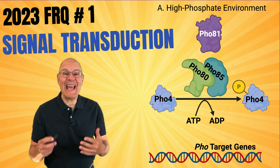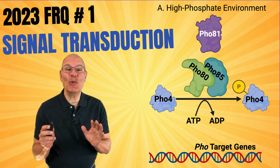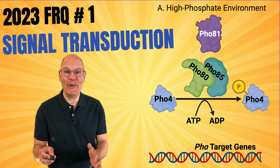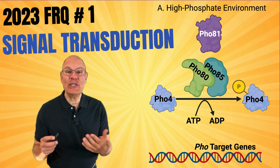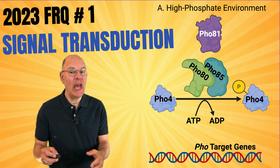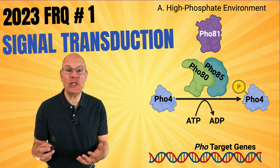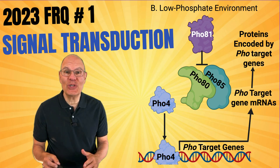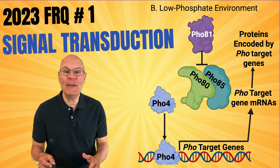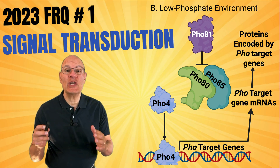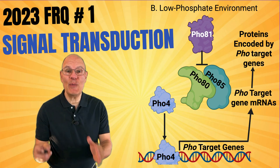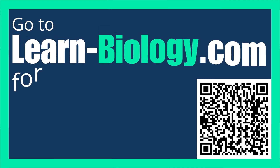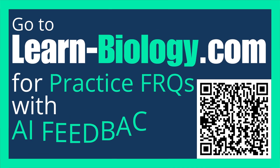In this video, we're going to look at FRQ number one from the 2023 AP Bio exam. The topic is signal transduction, and we're going to look at situations where signals get blocked and where signals get amplified. Along the way, we're going to analyze plenty of experimental data.